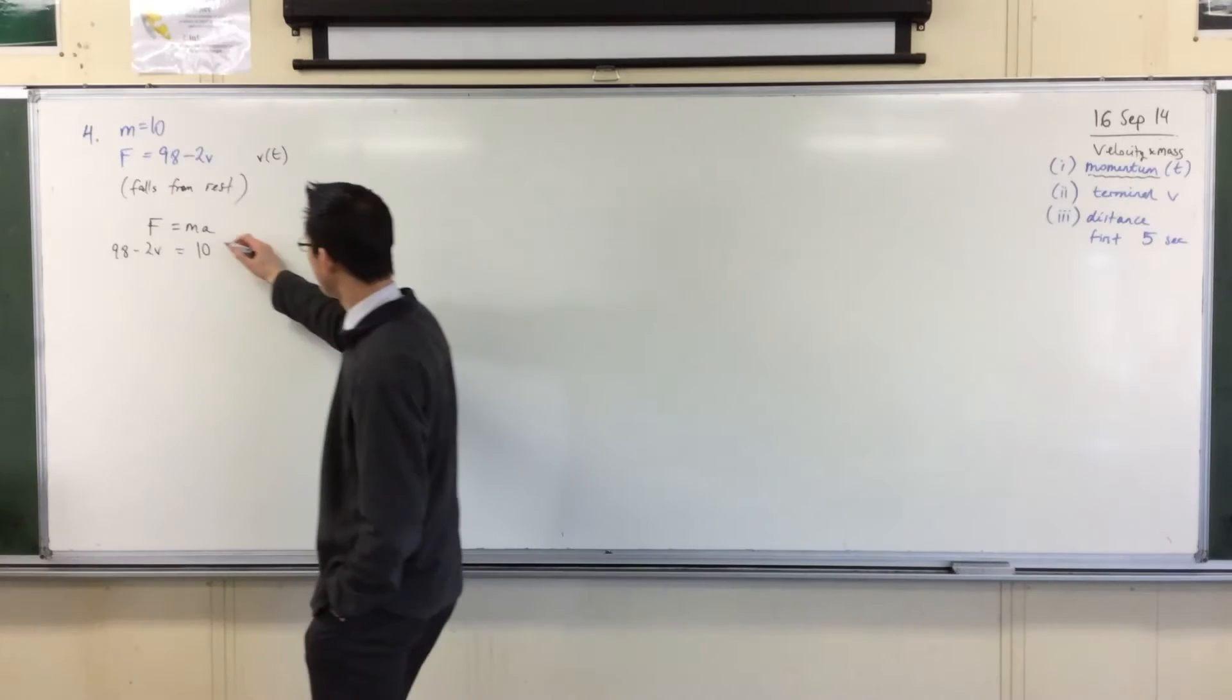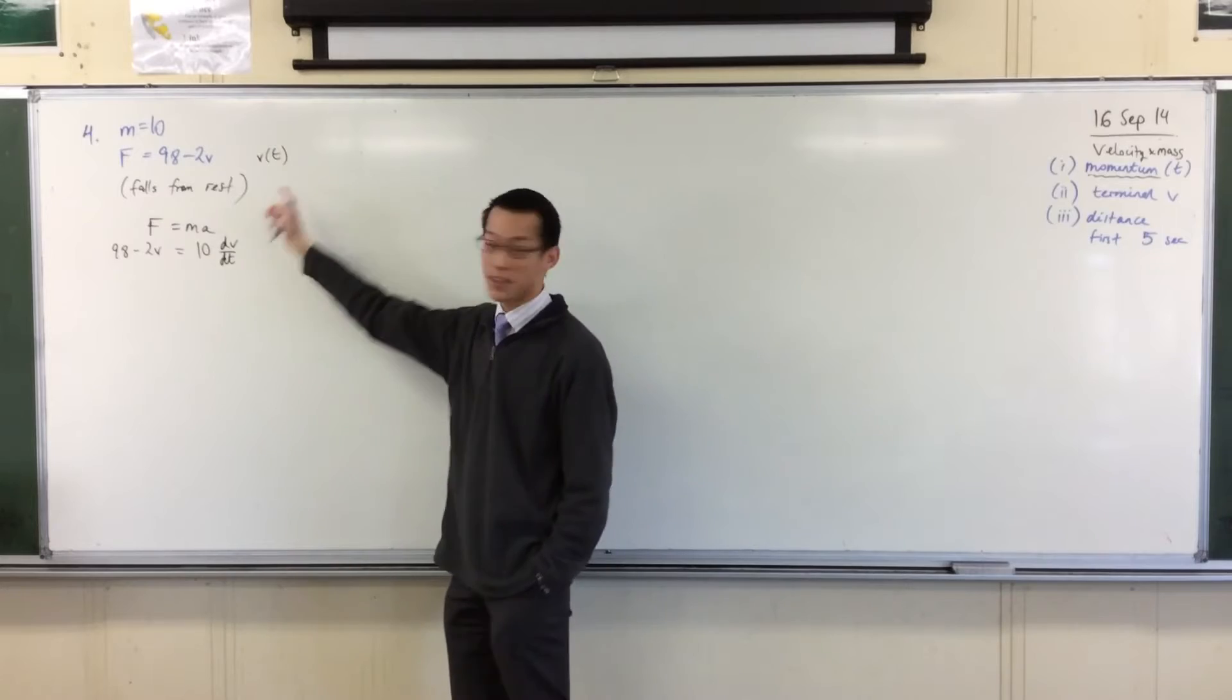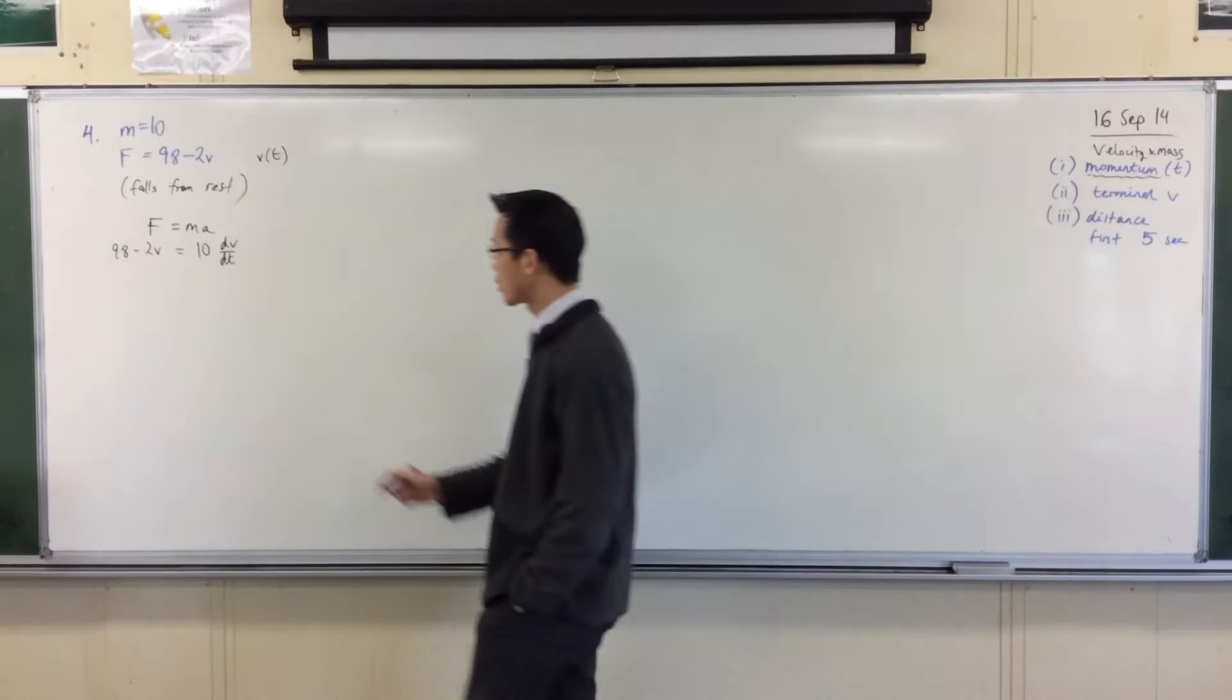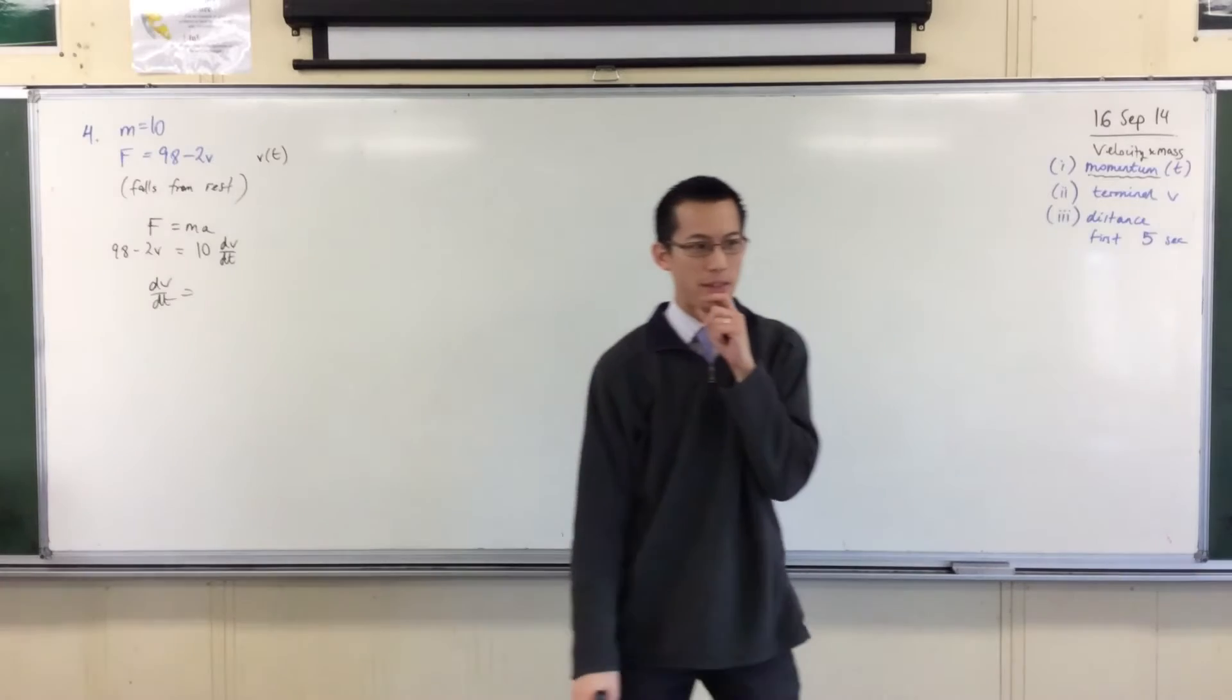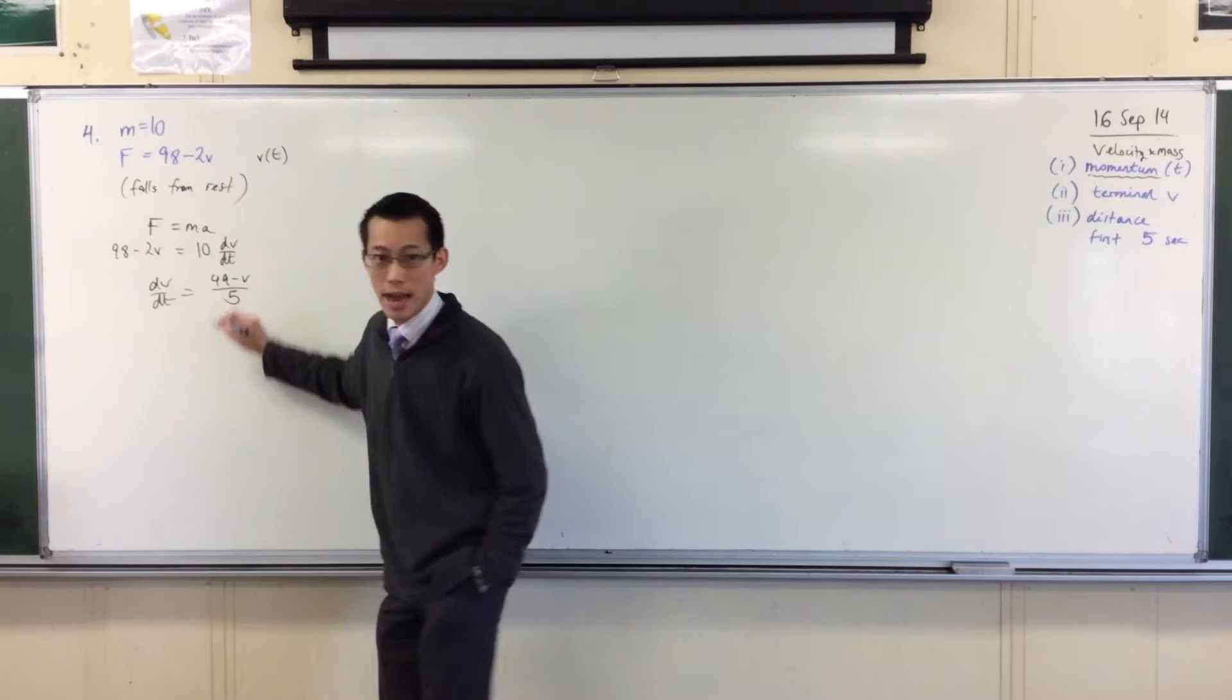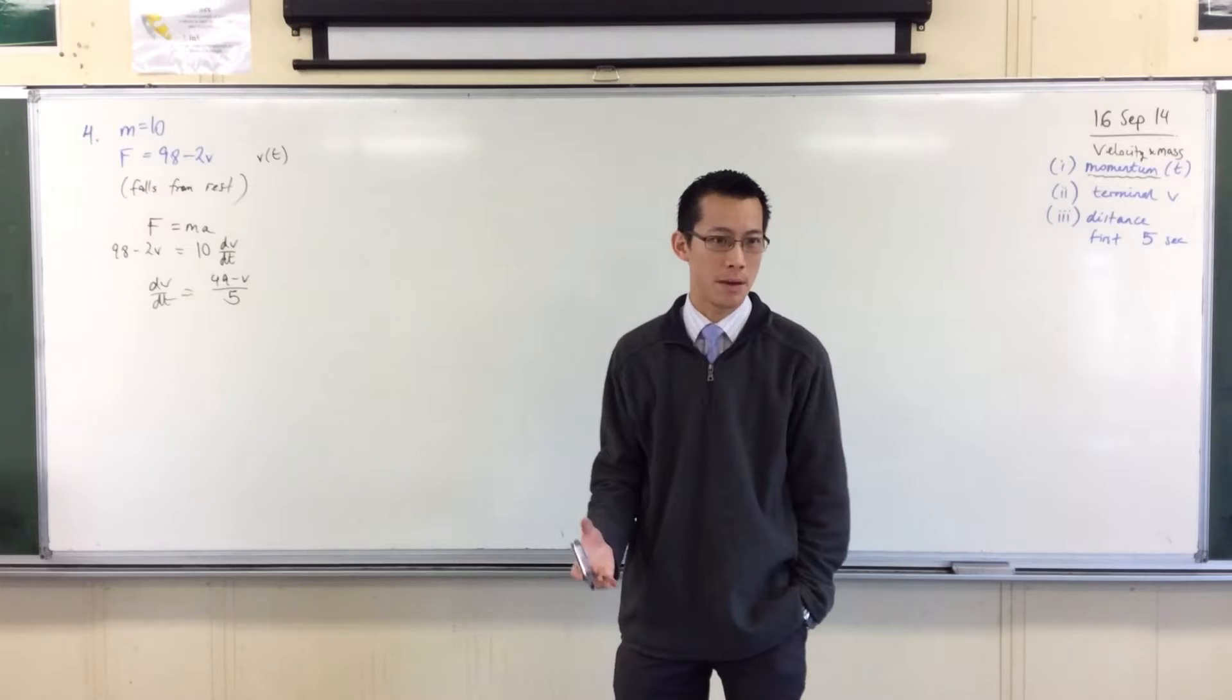dv/dt, right? I'm going that way because I'm going to have to do things with times later on. And I want momentum as a function of time. So far so good. I'll divide through, rearrange. 98 minus 2v, I'll divide both sides by 10. That gives me 49 minus v over 5. You happy with that? I just divide it, okay.